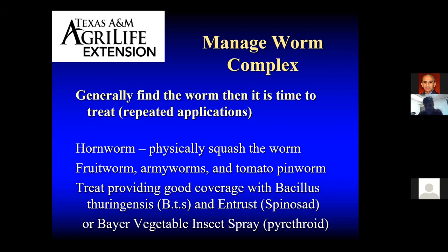Certain lepidopteran worms have gotten resistant to Spinosad, so we want to use these products in a rotation. If you're okay with synthetic products, the Bayer vegetable insect spray has a pyrethroid — that would be another product to rotate with. If you're organic only, that would be BTs and Entrust. If you just want to really control your worm complex and it doesn't matter to you, use all three products in some type of rotational manner to be effective.